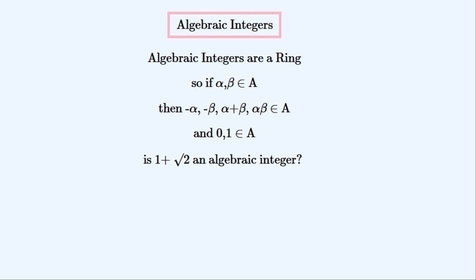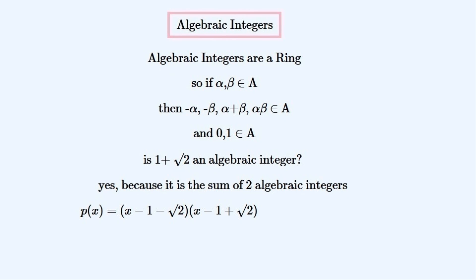So is this number an algebraic integer? Yes it is, because it is the sum of two algebraic integers, so we don't need to construct a monic polynomial for which it is a root. This is how we'd construct this monic polynomial: we'd multiply these two expressions together, which would give us a sum of squares, giving us an expression which is a monic polynomial. So we've shown that this number is an algebraic integer twice — first by using the ring properties of this set, and secondly by constructing a monic polynomial for it.